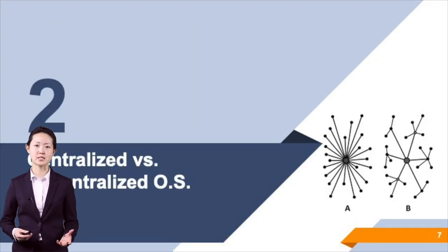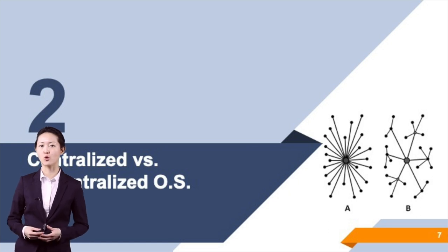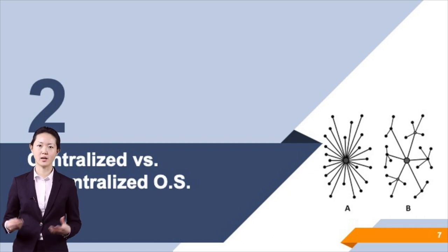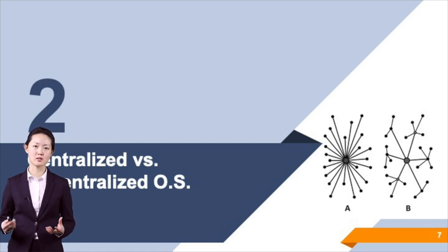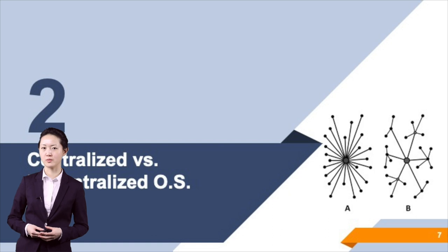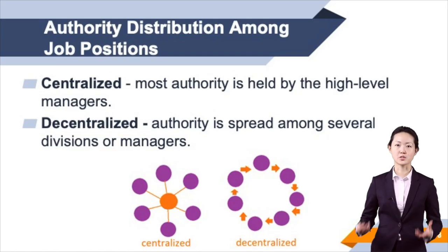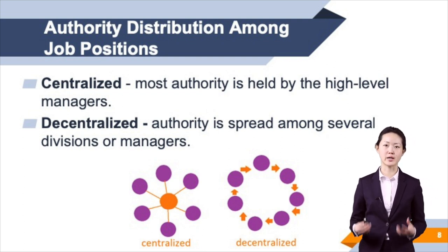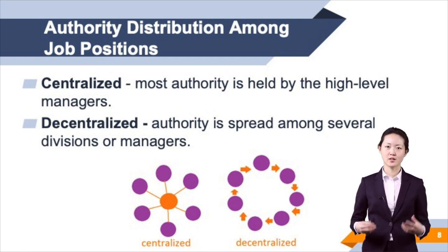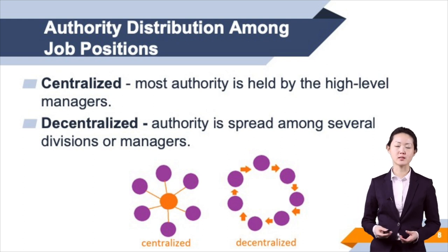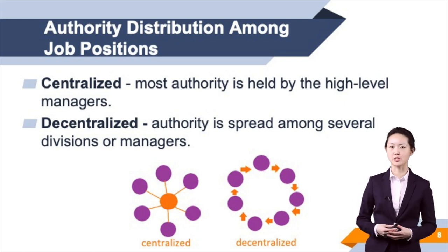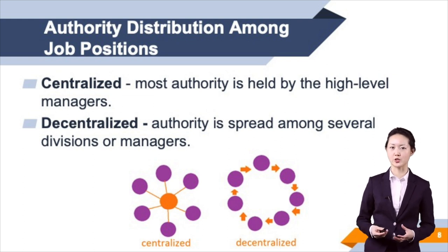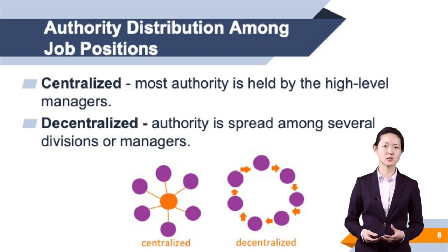Two firms may have the same organizational structure but middle managers of one firm may be given more authority than those of the other firm. The distribution of authority is often described by whether the firm is centralized or decentralized. Some firms tend to be more centralized where most authority is held by upper level managers. In centralized firms, middle and supervisory managers have less responsibility — they are responsible for day-to-day tasks and reporting to the top managers, but are not allowed to make decisions.